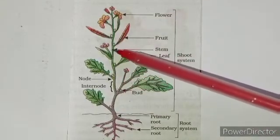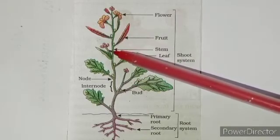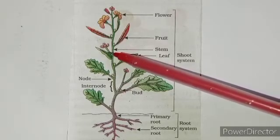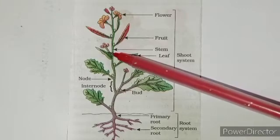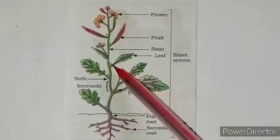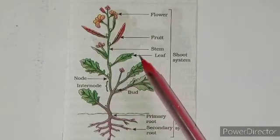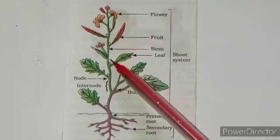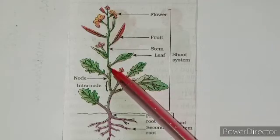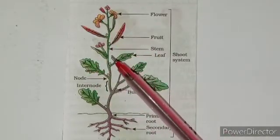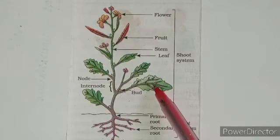The main part of the shoot is the stem. The stem makes the plant stand upright and carries water and nutrients from the roots up to the rest of the plant. Branches, leaves, flowers, and fruits all grow on the stem. The stem also carries the food made by the leaves to all parts of the plant.